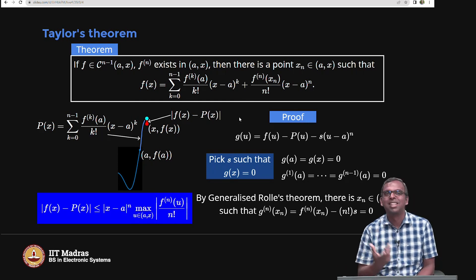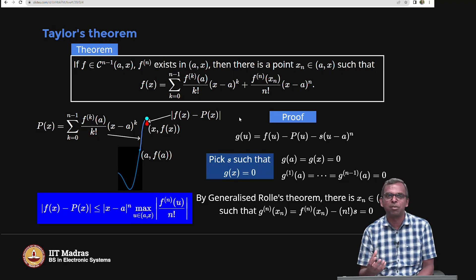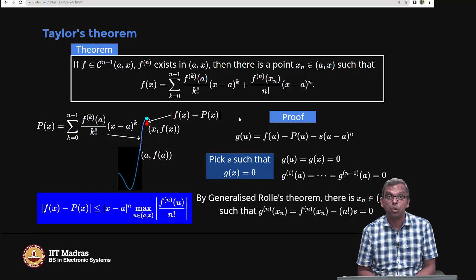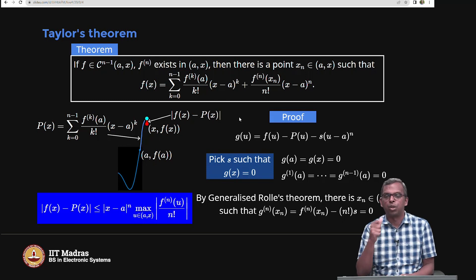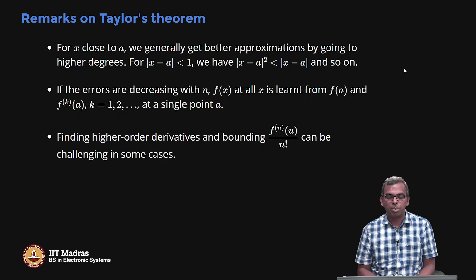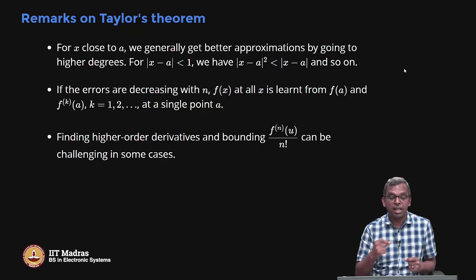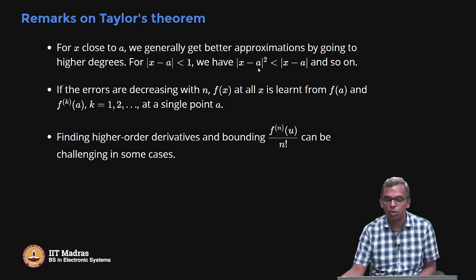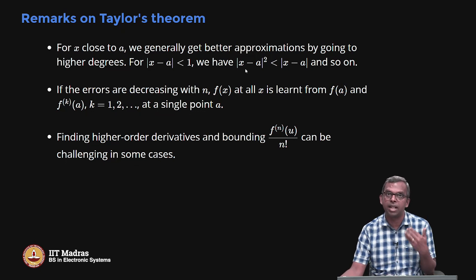Hopefully you enjoyed the proof. It is an interesting proof and once again it shows the principle of deduction in mathematics: start with a simple result, use clever logical ideas to make it more and more complicated, and you have wonderful big results at the end — like Taylor's theorem, which tells you a smooth enough function always has a strong polynomial approximation around A, and the error can be bounded depending on the nth derivative. If x is close to A, you keep getting better approximations to higher degrees, as long as the derivatives are not blowing up.